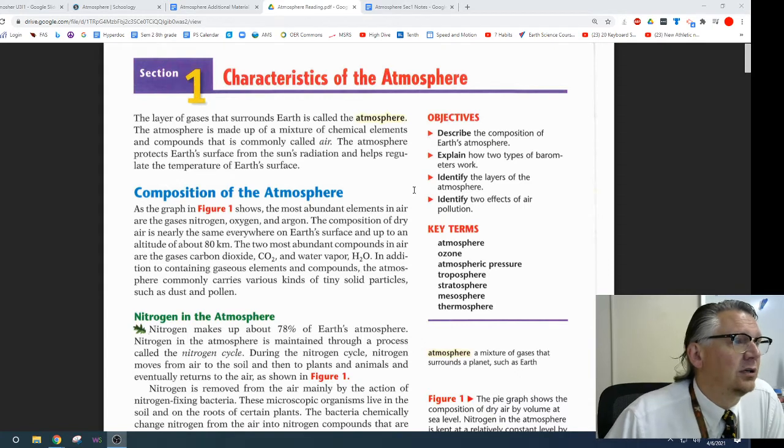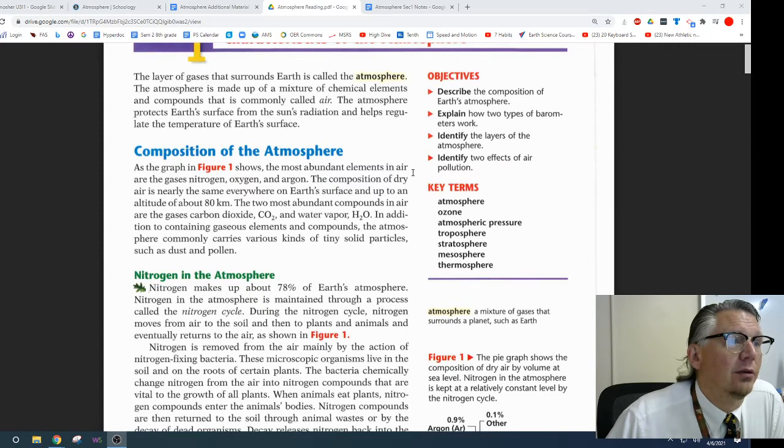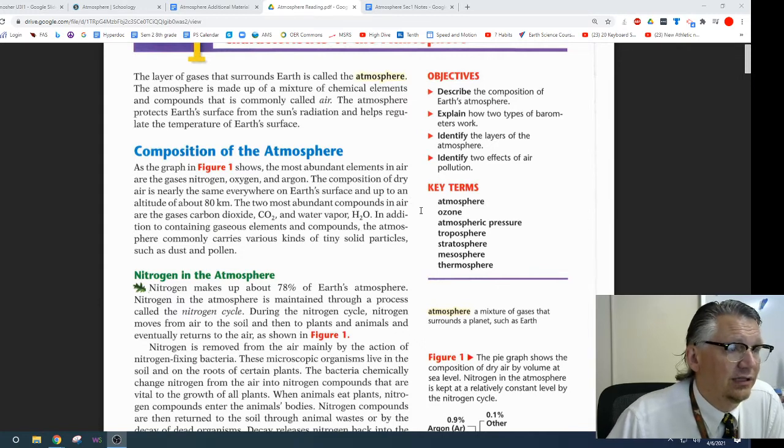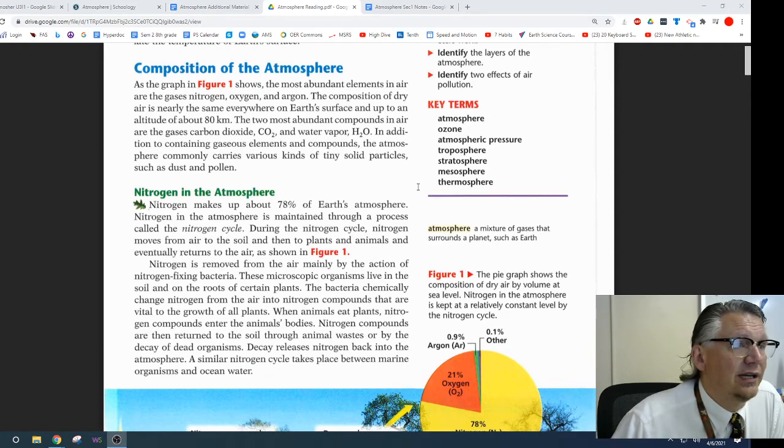Composition of the Atmosphere. As the graph in Figure 1 shows, the most abundant elements in the air are the gases nitrogen, oxygen, and argon. The composition of dry air is nearly the same everywhere on Earth's surface and up to an altitude of about 80 kilometers. The two most abundant compounds in the air are the gases carbon dioxide and water vapor. In addition to containing gaseous elements and compounds, the atmosphere commonly carries various kinds of tiny solid particles, such as dust and pollen.